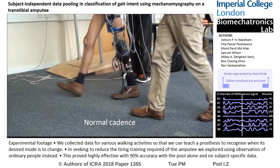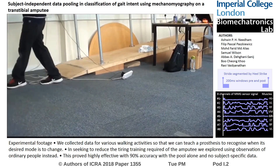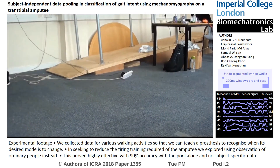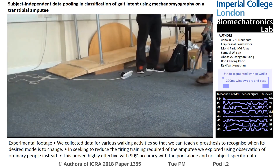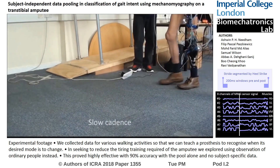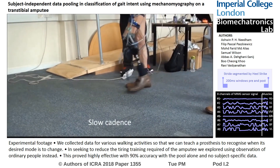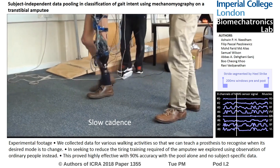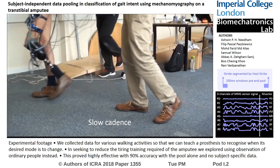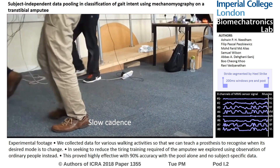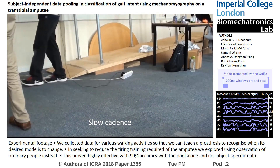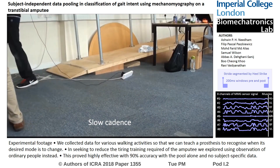including one transtibial amputee, for training of a gait intent classifier for a group of five gait modes, for informing a powered knee prosthetic controller using mechanomyographic (MMG) muscle activation sensors.